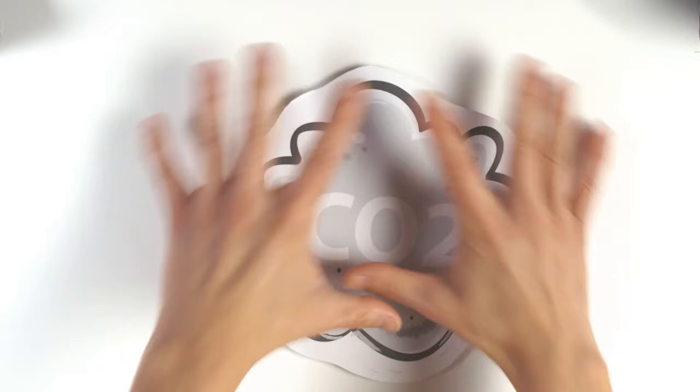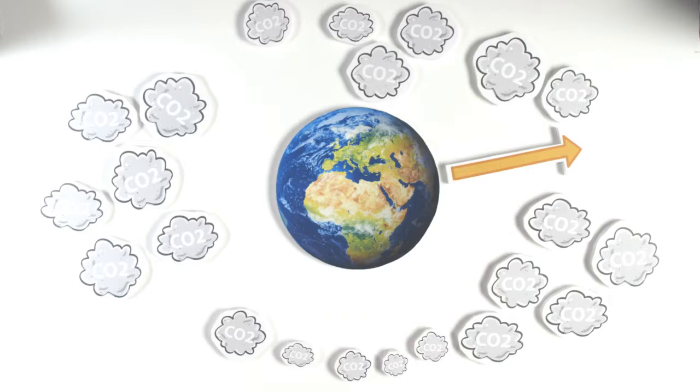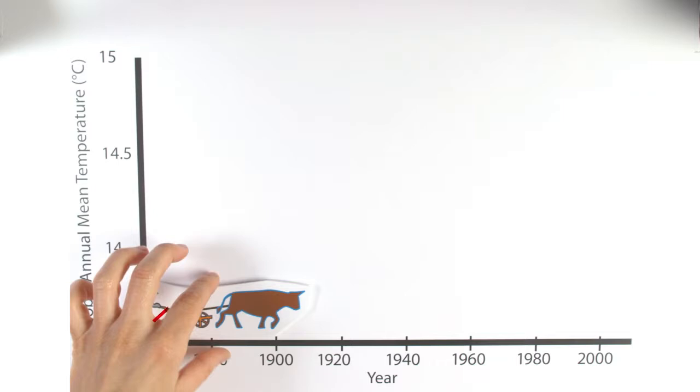Emitting the gas carbon dioxide is an important way that we humans influence climate. The more carbon dioxide there is in the atmosphere, the more heat is absorbed, and this results in the planet warming up.